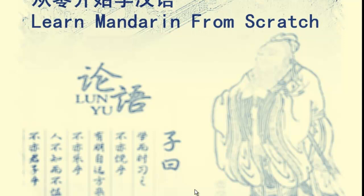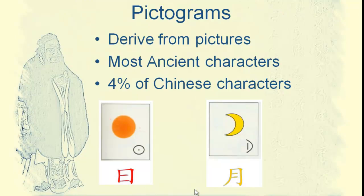Hello everybody, welcome to Learn Mandarin from Scratch. Today we are going to learn some of the most ancient Chinese characters — 象形字. 象形字 is derived from pictures. These characters are the most ancient characters in Chinese, and about 4% of Chinese characters are 象形字.